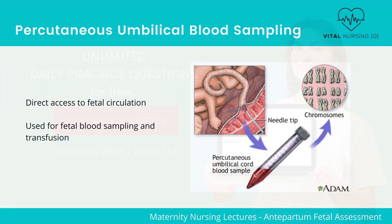This test is also referred to as cordocentesis. It has direct access to fetal circulation. The main reason for percutaneous umbilical blood sampling is for fetal blood sampling and transfusion. It is mainly performed in high-risk centers, though many centers have replaced this with a placental biopsy instead.